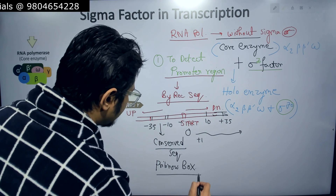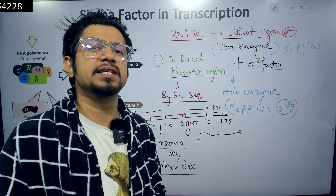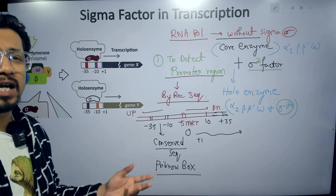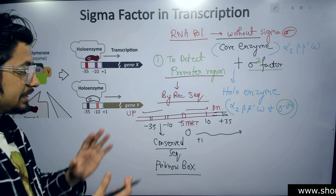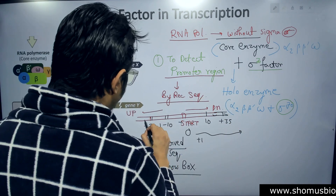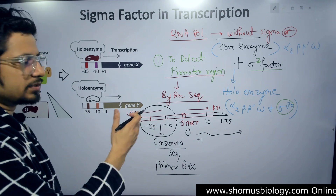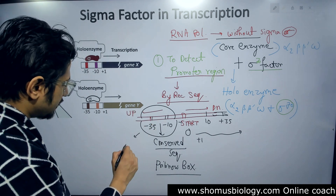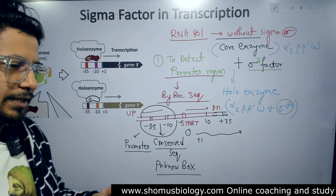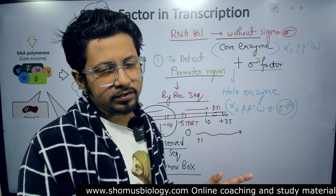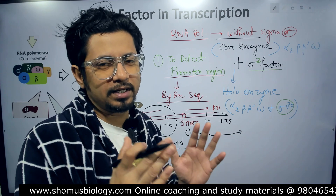In eukaryotes, we also have a conserved sequence known as the TATA box, with the sequence T-A-T-A-A-T. Here in prokaryotes, we don't have a TATA box, but we have a similar element called the Pribnow box, present at minus 10 and minus 35. The RNA polymerase is loaded somewhere upstream of the start site, in this sequence of minus 35 to minus 10 — that region is part of the promoter.